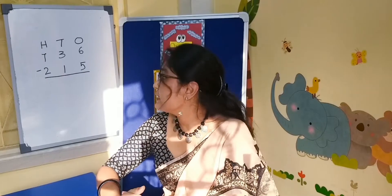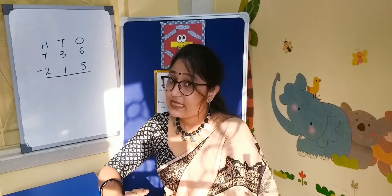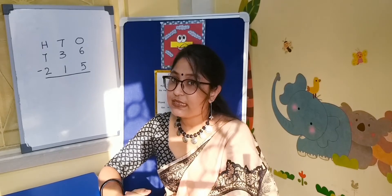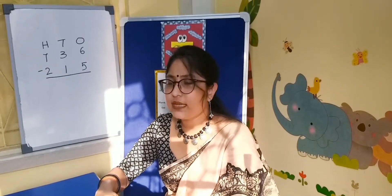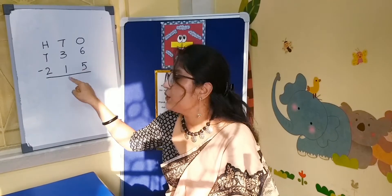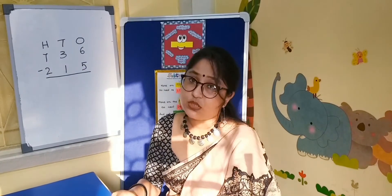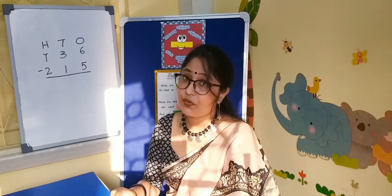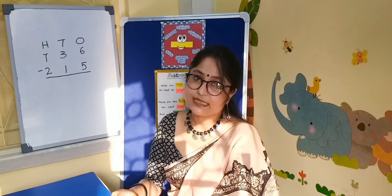As you can see, I have written two numbers: 736 and 215. We all know that 736 is bigger than 215 and we have to subtract 215 from 736.